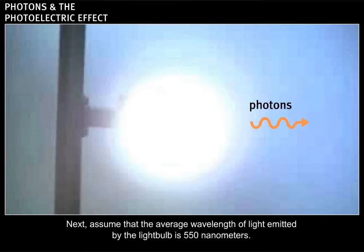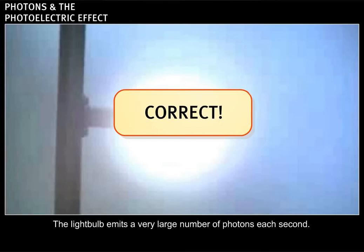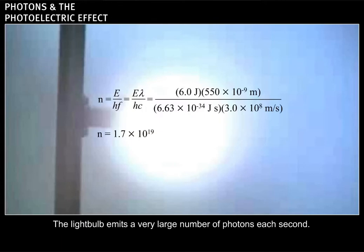Next, assume that the average wavelength of light emitted by the light bulb is 550 nanometers. How many photons are emitted per second by the light bulb? Correct. The light bulb emits a very large number of photons each second.